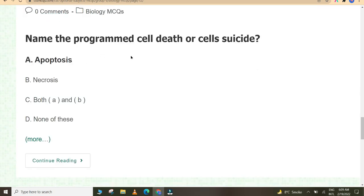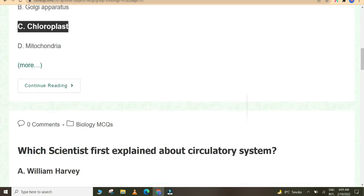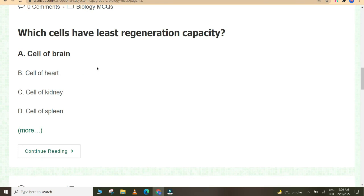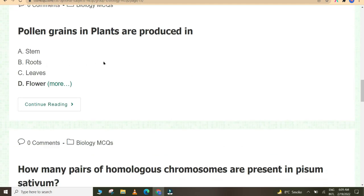Name the programmed cell death or cell suicide: apoptosis. In which cell organelle do photo and thermochemical reactions occur in different sites? Chloroplast. Which scientist first explained about circulatory system? William Harvey. Which cells have least regeneration capacity? Cells of brain. Pollen grains in plants are produced in flower.